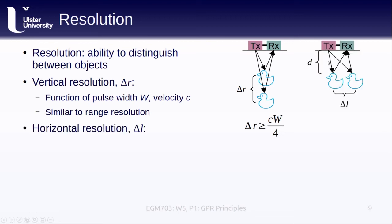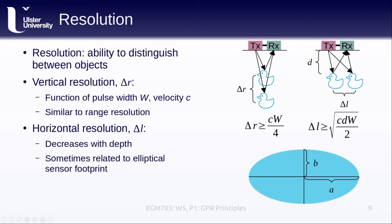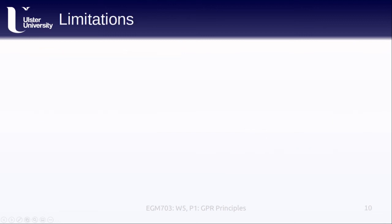The horizontal resolution, or the ability to distinguish between objects that are separated by a horizontal distance, also depends on the pulse width and propagation speed, as well as the depth. As D increases, our ability to distinguish between objects that are separated horizontally decreases. This is similar to azimuth resolution for a real aperture radar system. You might also see the horizontal resolution related to the sensor footprint, which is approximately elliptical. The length of the semi-major axis A depends on the wavelength of the signal, the electric permittivity, and the depth. The length of the semi-minor axis B is just half of the length of the semi-major axis.